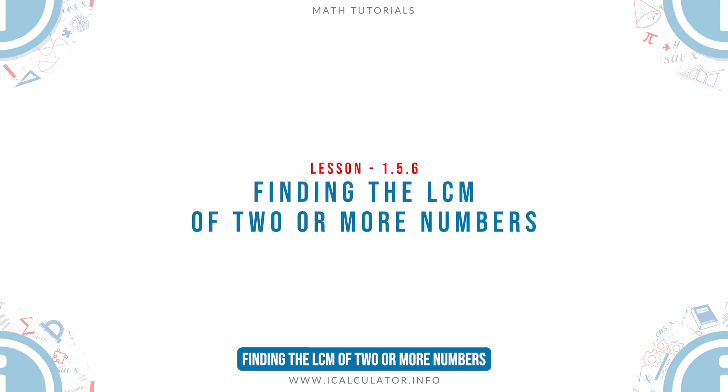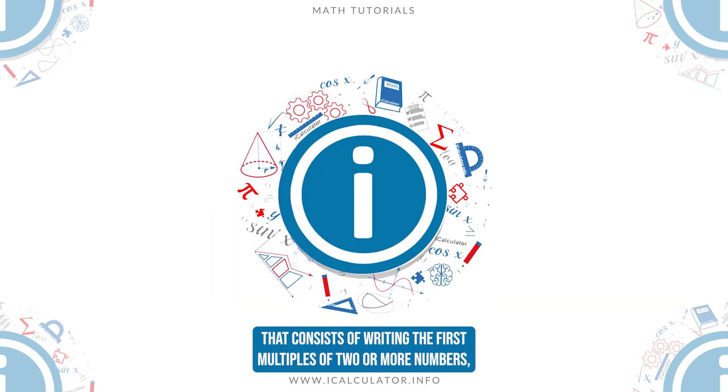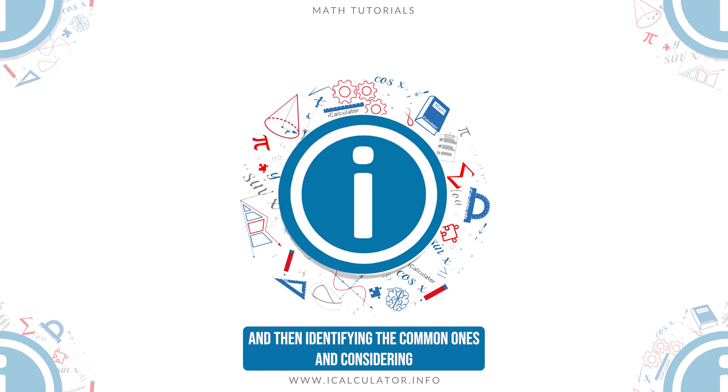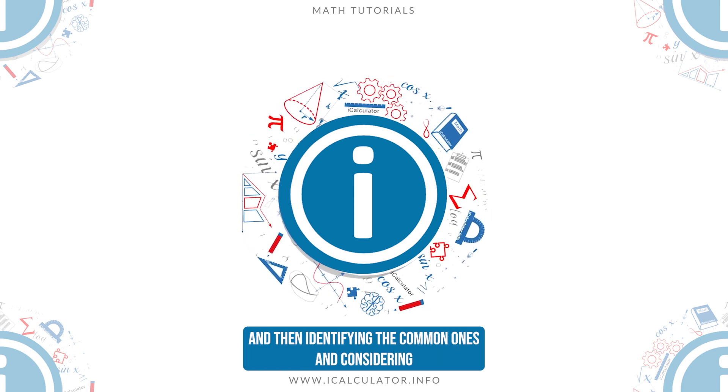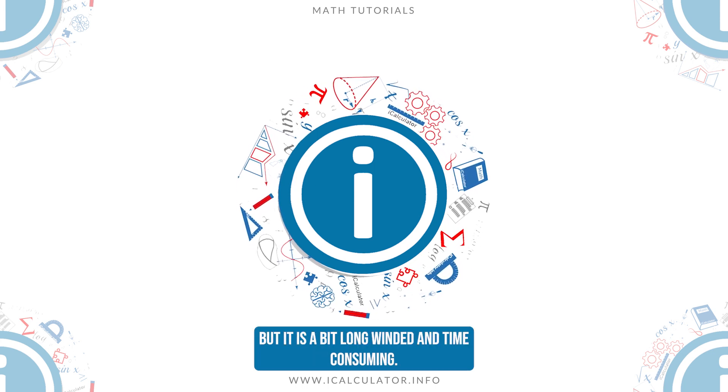Finding the LCM of two or more numbers. The method used in the last example that consists of writing the first multiples of two or more numbers and then identifying the common ones and considering only the least common multiple is okay, but it is a bit long-winded and time-consuming.